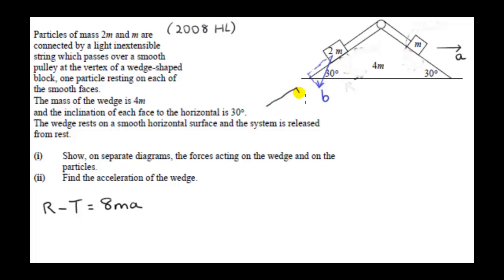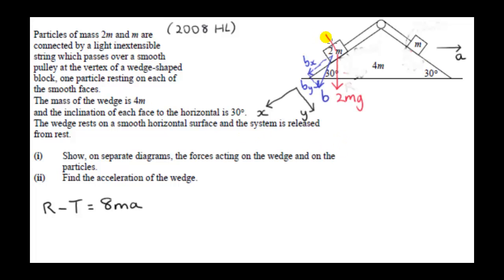Just like we saw previously, for convenience, our positive x-axis is down the incline, and our positive y-axis is perpendicular and into the incline. Both x and y components of the acceleration will be positive. We can guess that the 2m mass is going to move downwards down the incline, because it has greater mass than the mass on the other side, and both angles are the same. We have the weight of the 2m mass and the force on it due to the wedge. I'll call the string tension V.